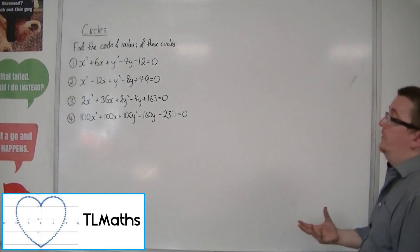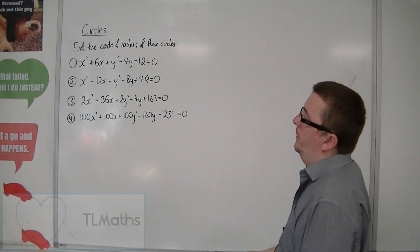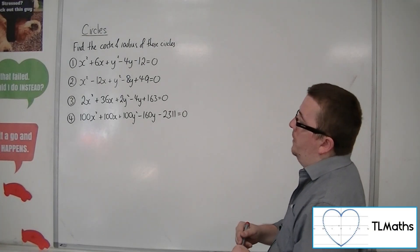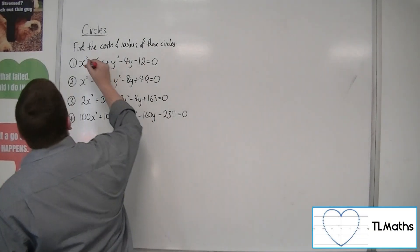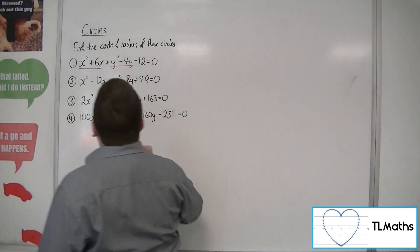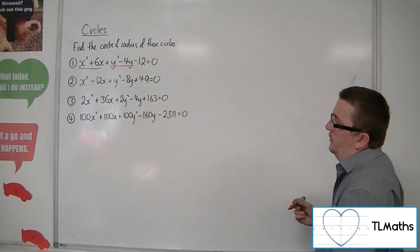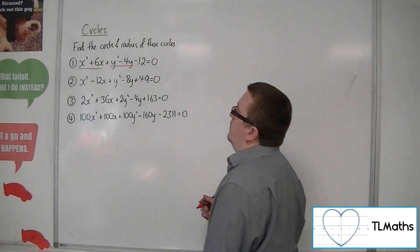Let's say I want to find the centre and radius of each of these circles. So if we have a look at this first one, what I'm going to do is I'm going to complete the square on both parts, the x squared plus 6x and the y squared minus 4y.